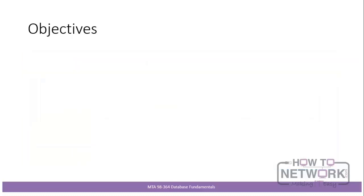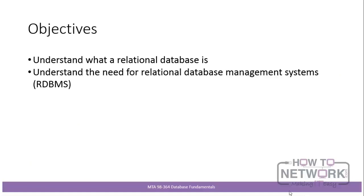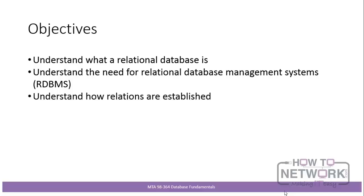To summarize the objectives: understand what a relational database is — you should understand the importance of tables and the linkage between them. Understand the need for relational database management systems. And understand how relations are established — by having foreign keys in a table that point to primary keys in another table, or in some cases in their own table. That's the end of this section.